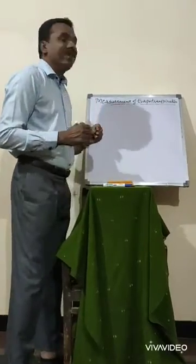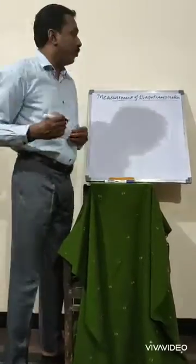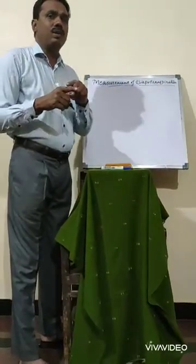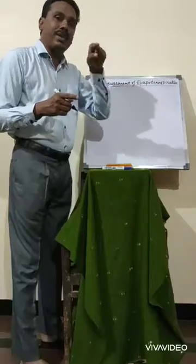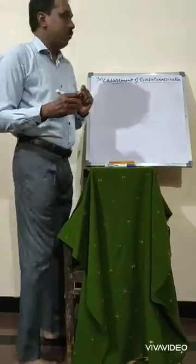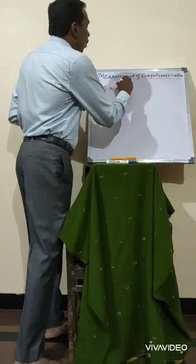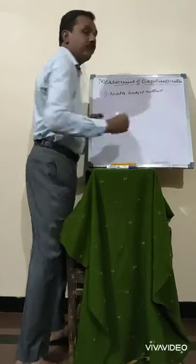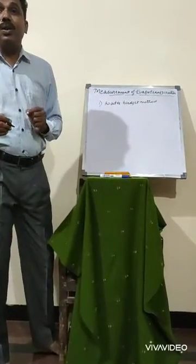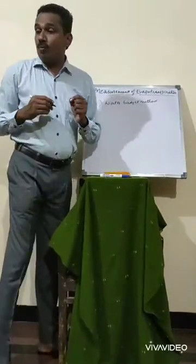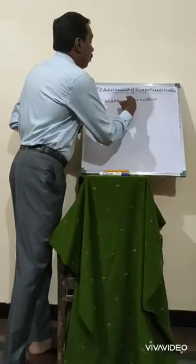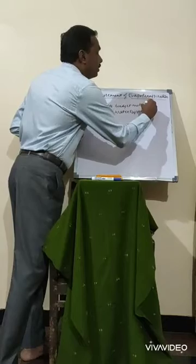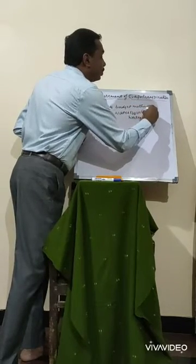I am going to explain the measurement of evaporation. Evaporation is a process which takes place in the vegetative cover. The first method used to measure evapotranspiration is the water budget method. The water budget method states that water supply is equal to water disposal.